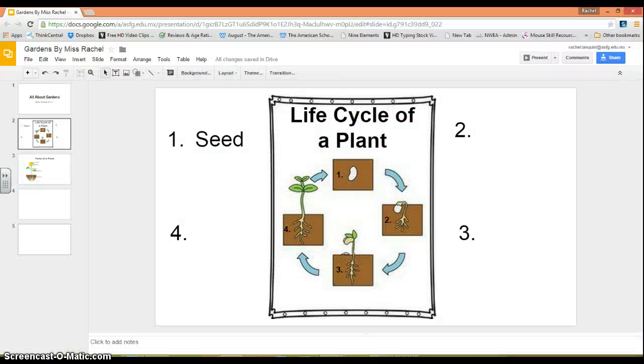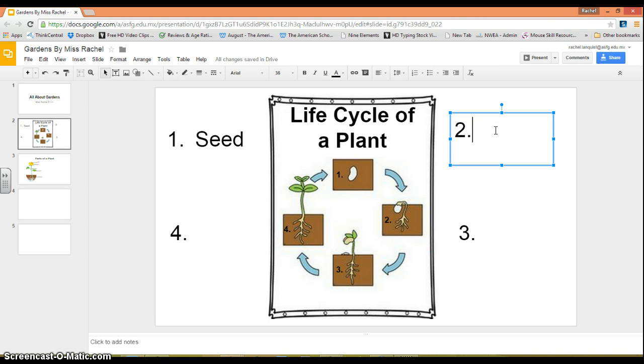The next part of the life cycle we're going to do is number two. So after a seed, we go to number two, and we have a seedling. So next to number two, I'm going to write seedling. If this happens, what I can do is I can pull on the blue to make it bigger so that it all fits in one space.